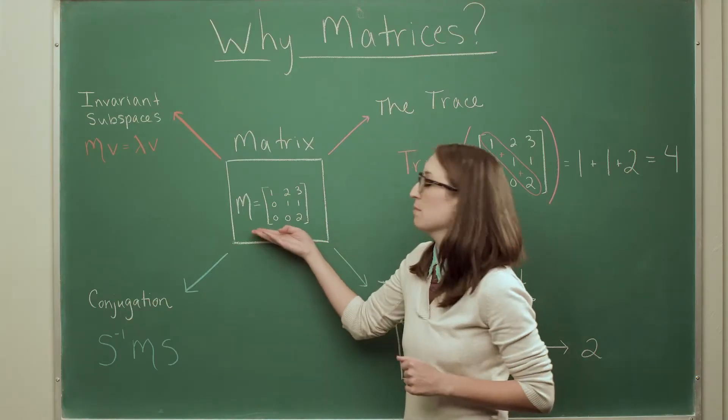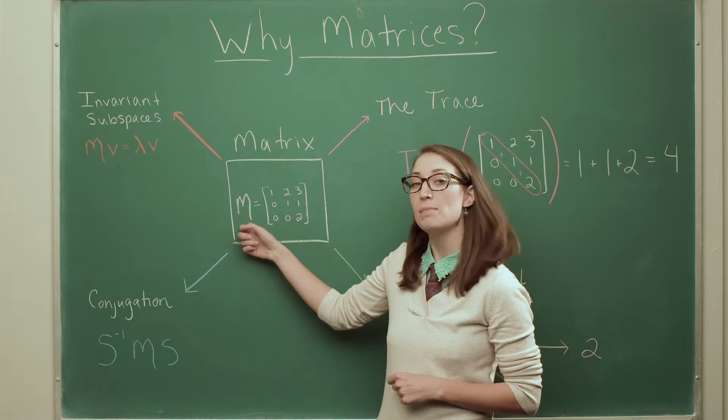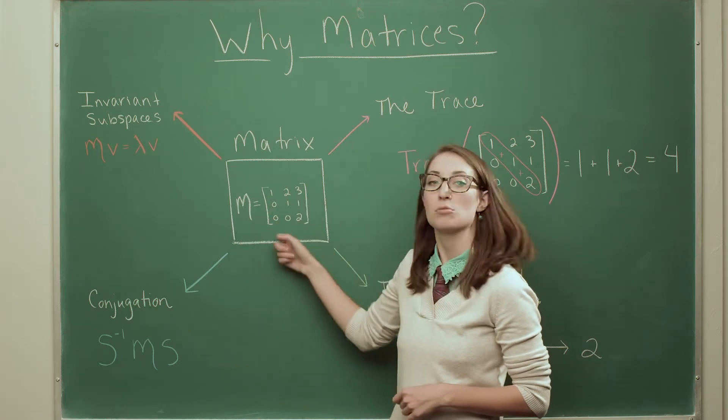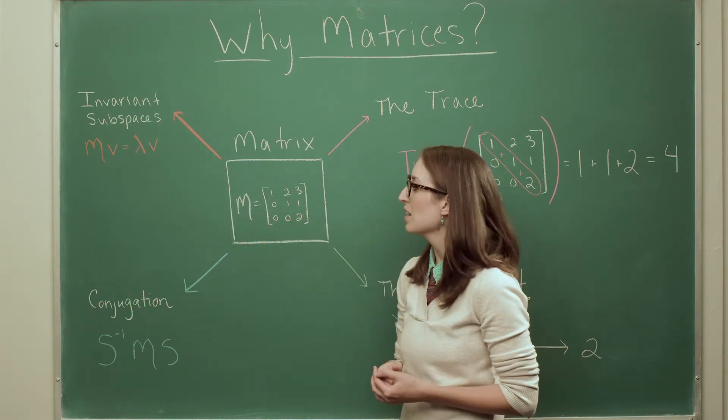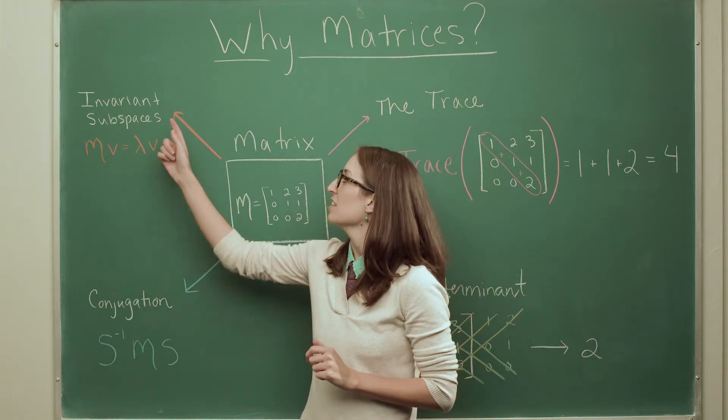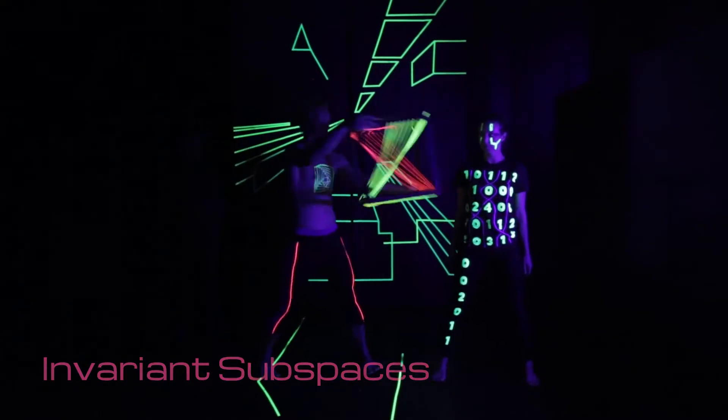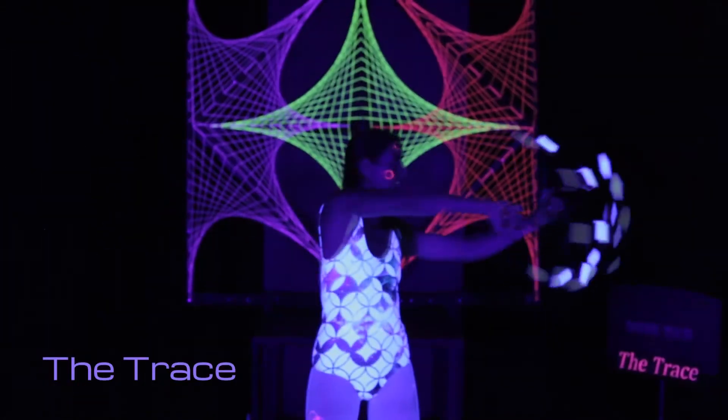The first thing we need to do is pick a matrix. So here I'm going to call my matrix M, and it'll be this three by three matrix. Now in the video, we saw these four operations: the invariant subspaces, conjugation, the trace, and the determinant.